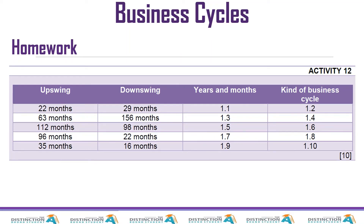This brings us to the end of the lesson content. The activity has questions 1.1 to 1.10. For example, if you have an upswing of 22 months and a downswing of 29 months, number one asks you to calculate the total number of years and months, and number two asks you to identify what kind of business cycle that would be.